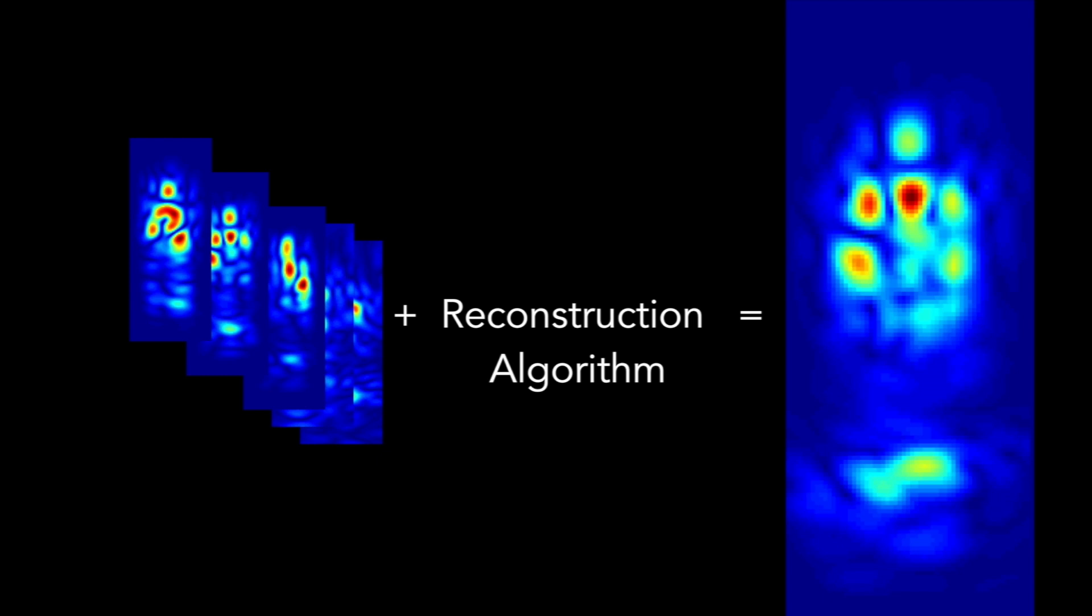It then combines these snapshots through a reconstruction algorithm that allows the device to recover the human silhouette through the wall. Here, we can see the person's head, chest, arms and feet.